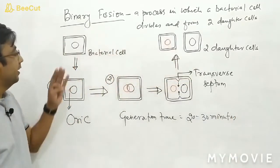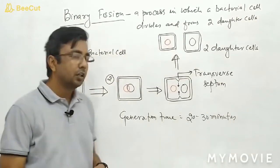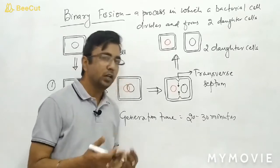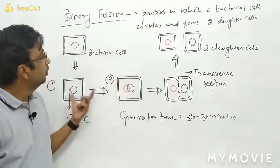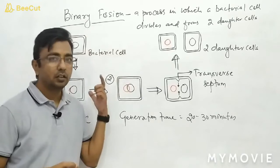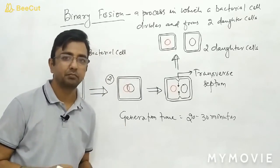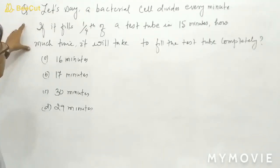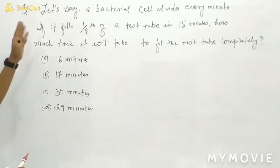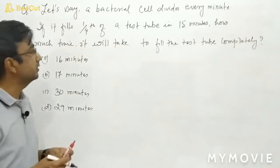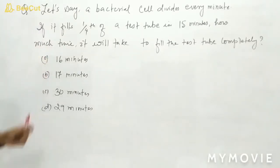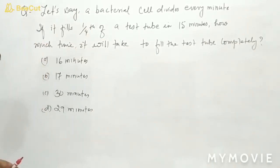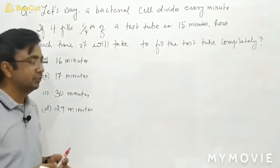Based on binary fission and the generation time, a few questions are asked in various competitive examinations. I will discuss one which is very common. The question is: let's say a bacterial cell divides every minute. If it fills one fourth of a test tube in 15 minutes, how much time will it take to fill the test tube completely?